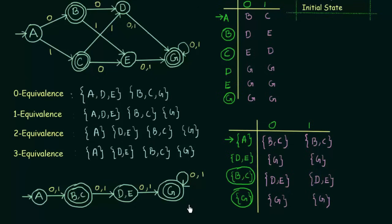In the original DFA we had 6 states, and counting the unreachable state it would have been 7 states, but in the minimized DFA we have only 4 states. We have successfully minimized the given DFA even when there was an unreachable state, by removing it and proceeding as we normally would. I hope this was clear — thank you for watching, and see you in the next one.